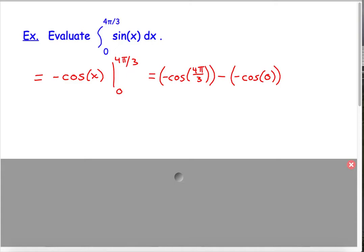All right, so now we have to go back to our unit circle. And what is the cosine of 4π over 3? That's in the third quadrant. That's the 60-degree reference angle, so the cosine is negative 1 half. So, this is going to give you the opposite of negative 1 half minus, and the cosine of 0 is 1, so minus the opposite of 1. So, these are all pluses, so we wind up getting 3 halves.